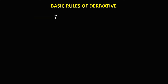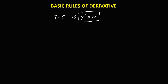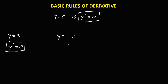For y equals a constant, the derivative y prime is always equal to 0. So if we have y equals 3, the derivative is 0. Then for y equals negative 10, the derivative is also equal to 0.